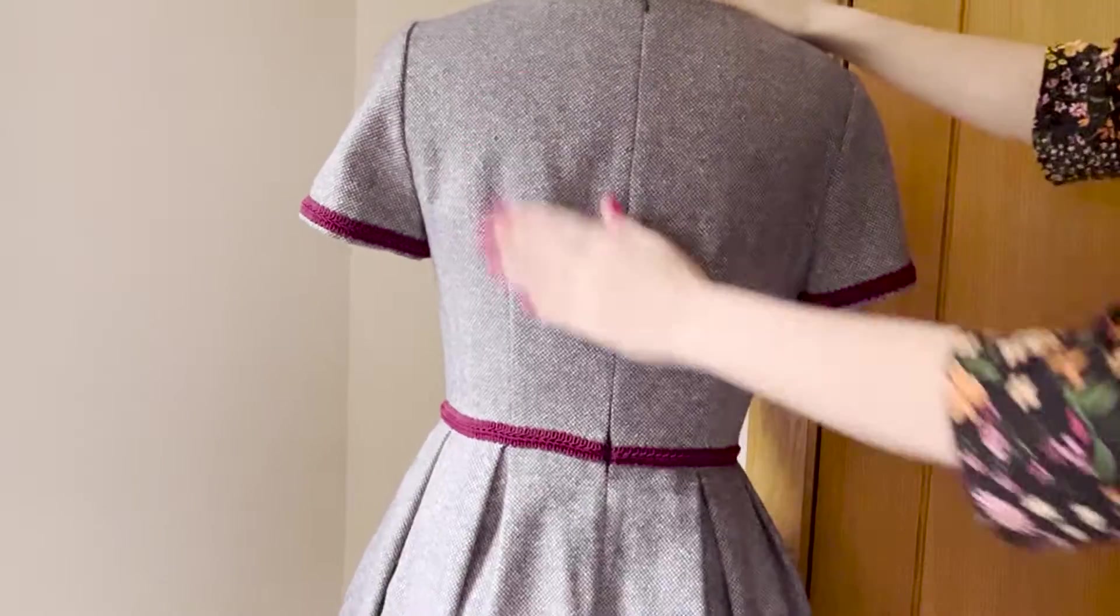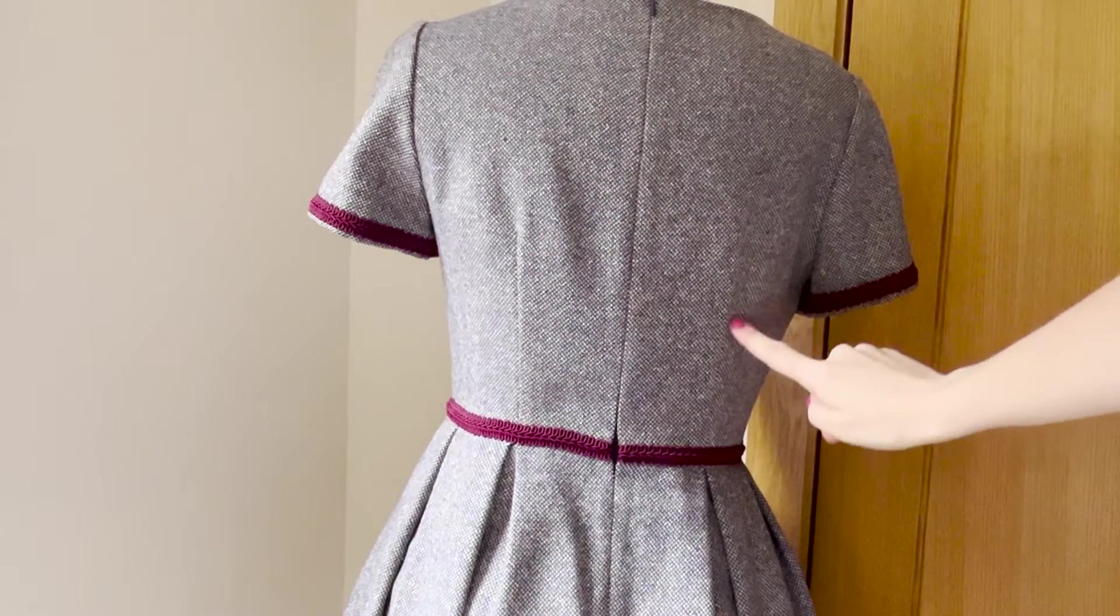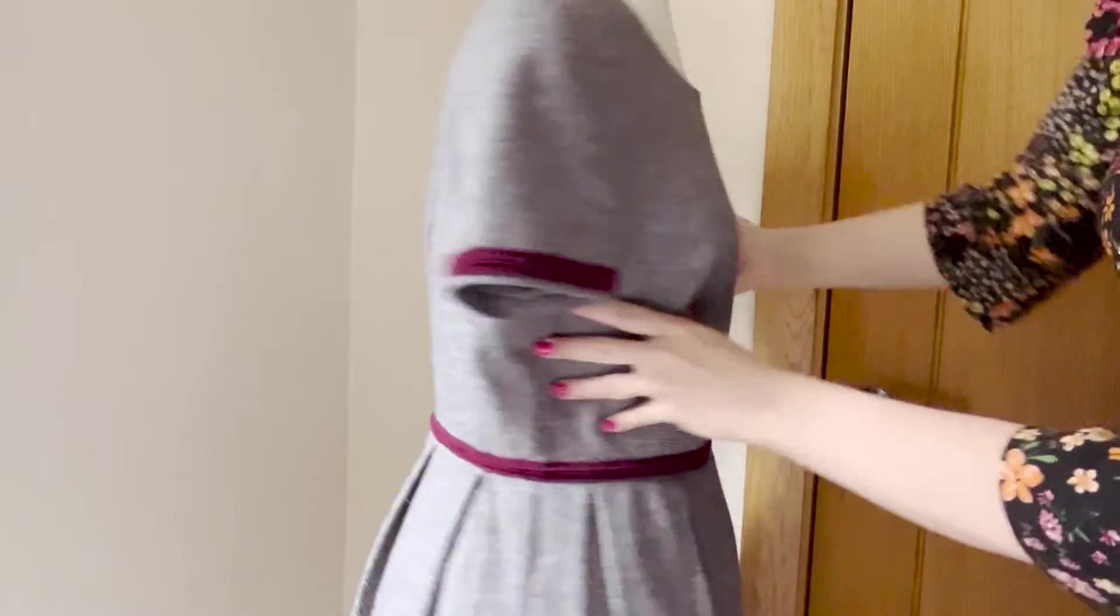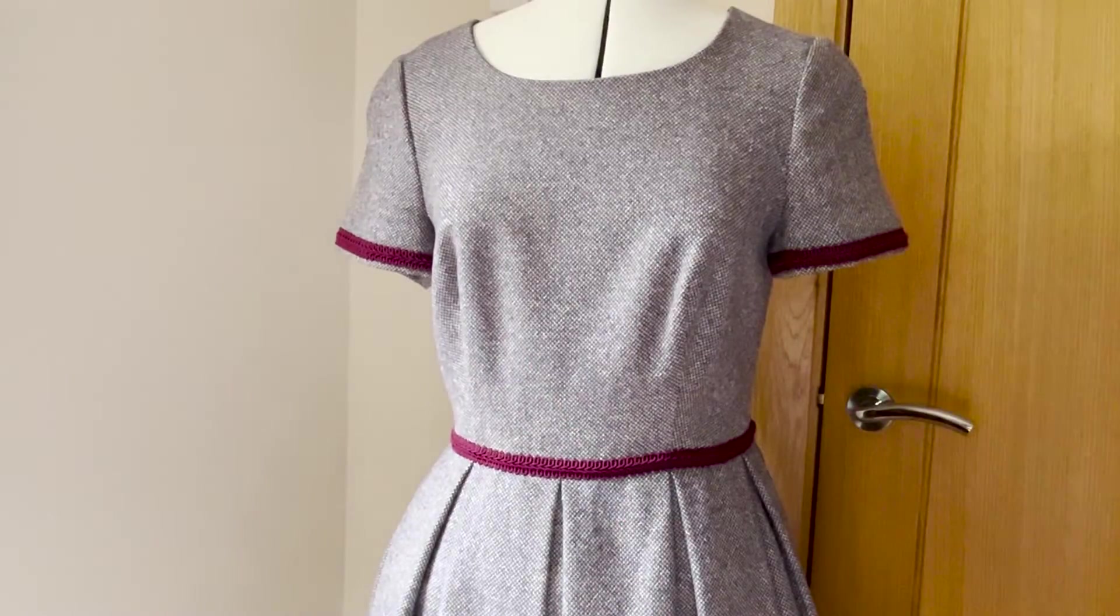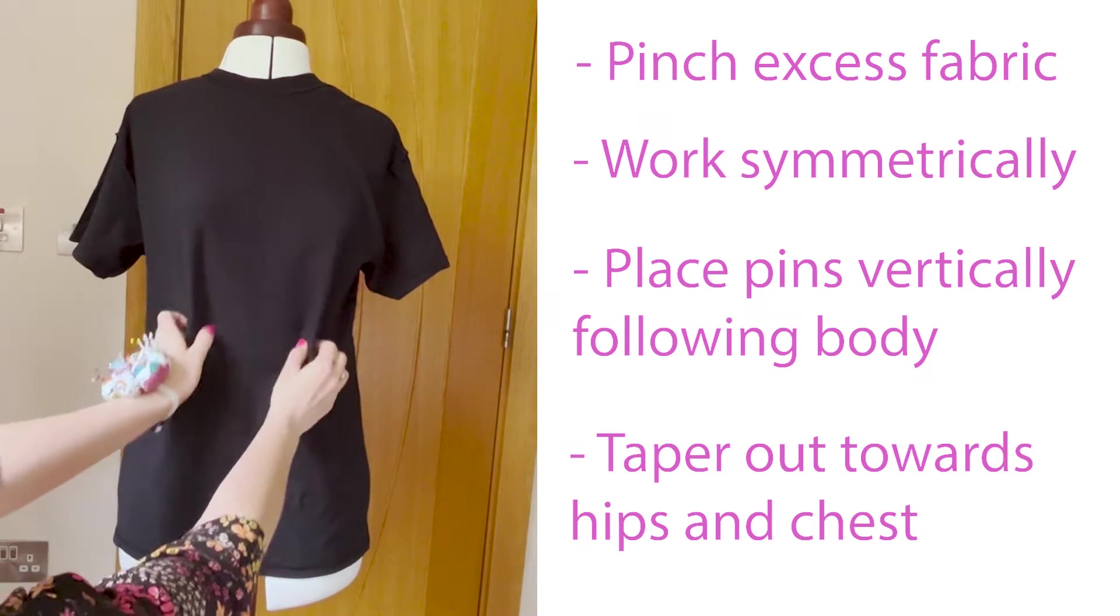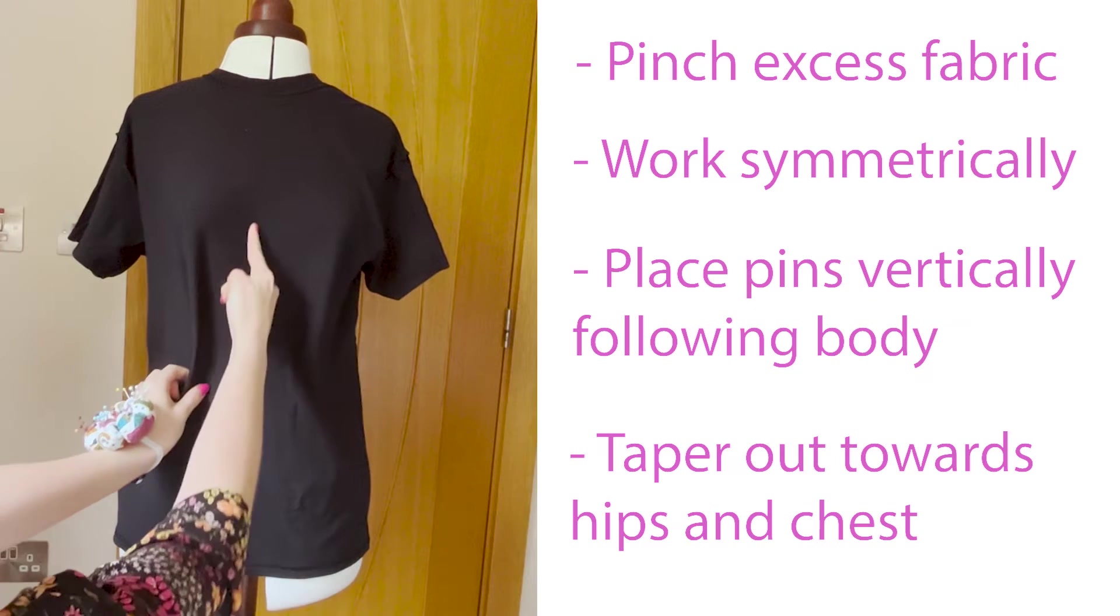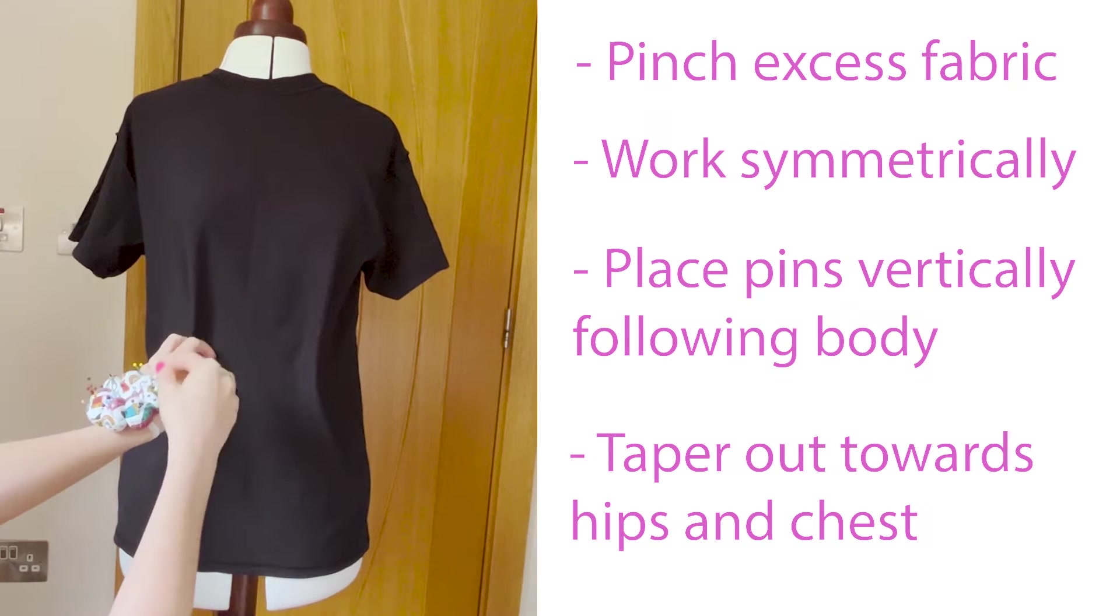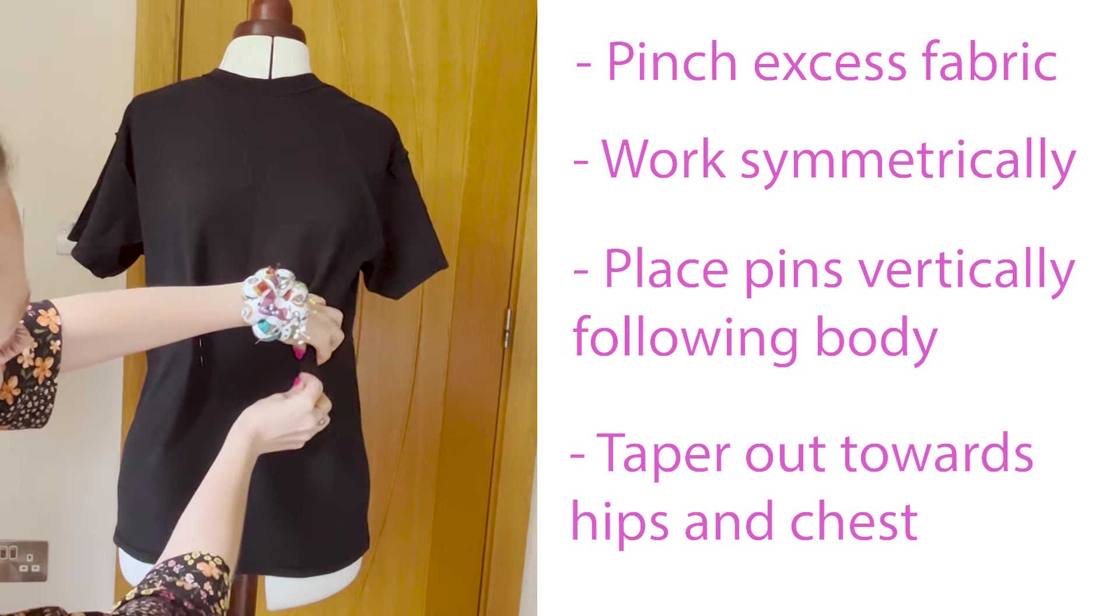The best way to really understand a dart is to get hands-on with some fabric and your body or a dress form if you have one. Take a basic unfitted t-shirt such as a pajama top and place it on. Now when you wear it you won't really see your body below. It will usually hang straight down from your widest point, be that the shoulders or the chest.